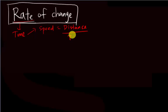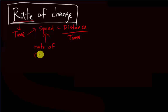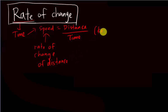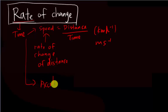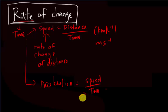Speed has time in it, so I can say speed is actually the rate of change of distance — how the distance changes each second. Speed is something like km per hour or meter per second. Another example you may be familiar with is acceleration, which is speed over time. So acceleration is the rate of change of speed.